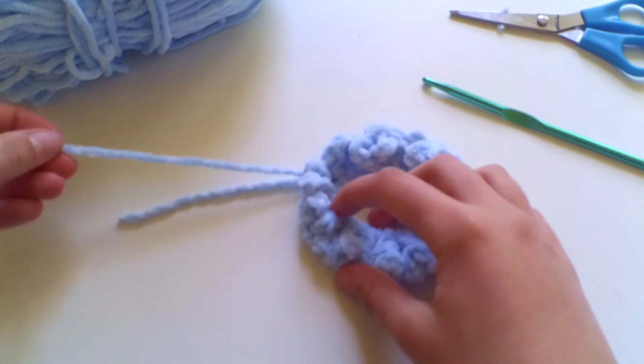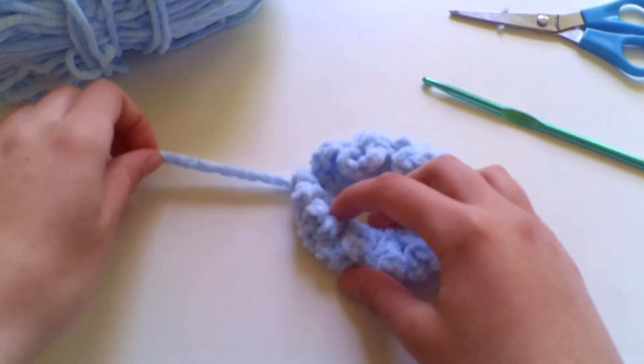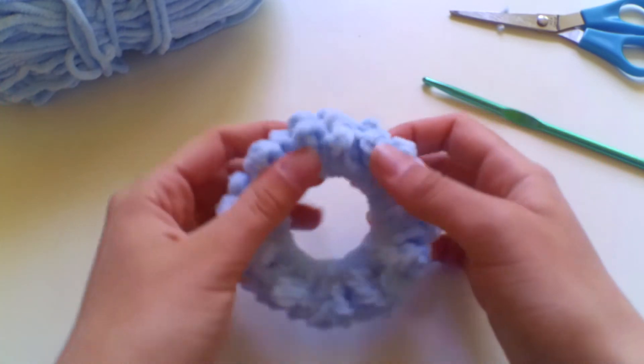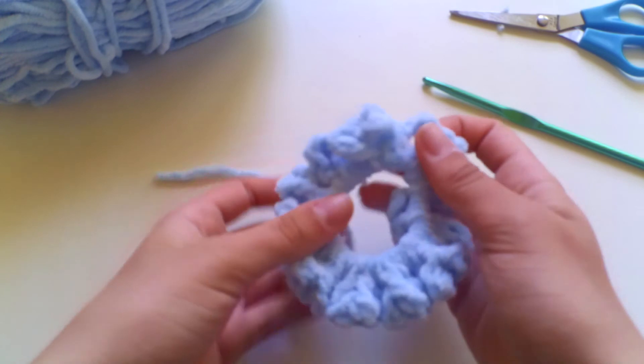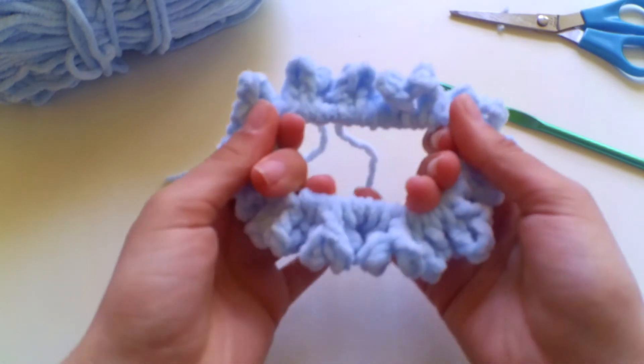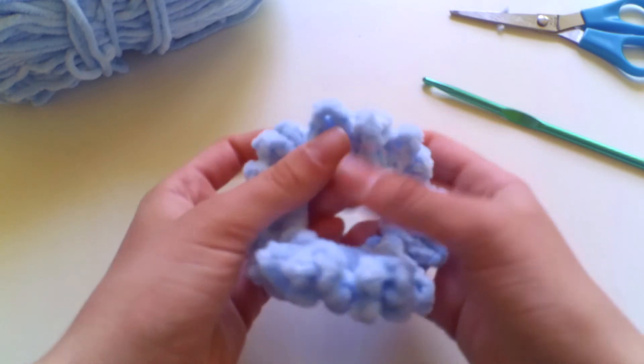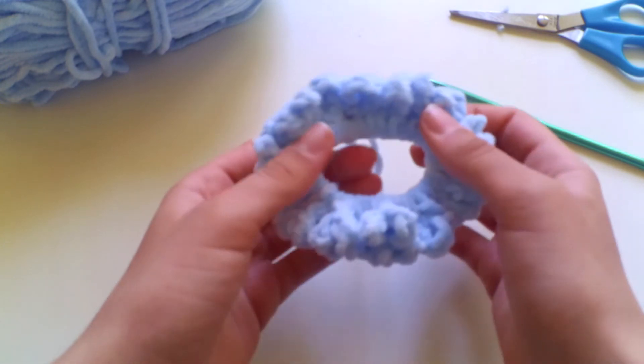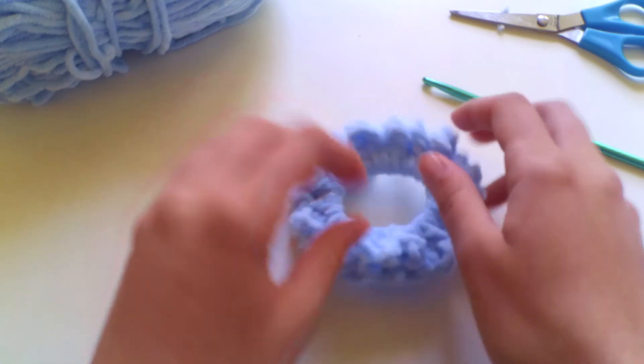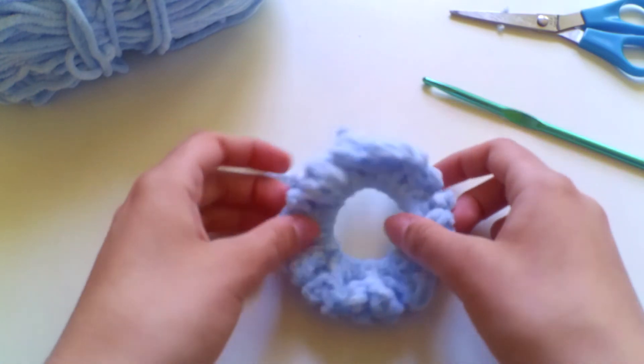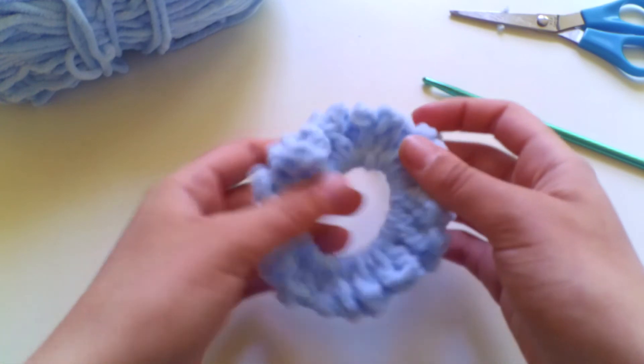So all you're going to do now is just sew in your two ends. So you just need to be careful with these not to go too tightly so that you bunch up the work because obviously when you stretch your scrunchie the ends could poke out if you do them a little bit too tightly. So just one thing is to do them nice and loosely and nice and gently throughout your scrunchie work.